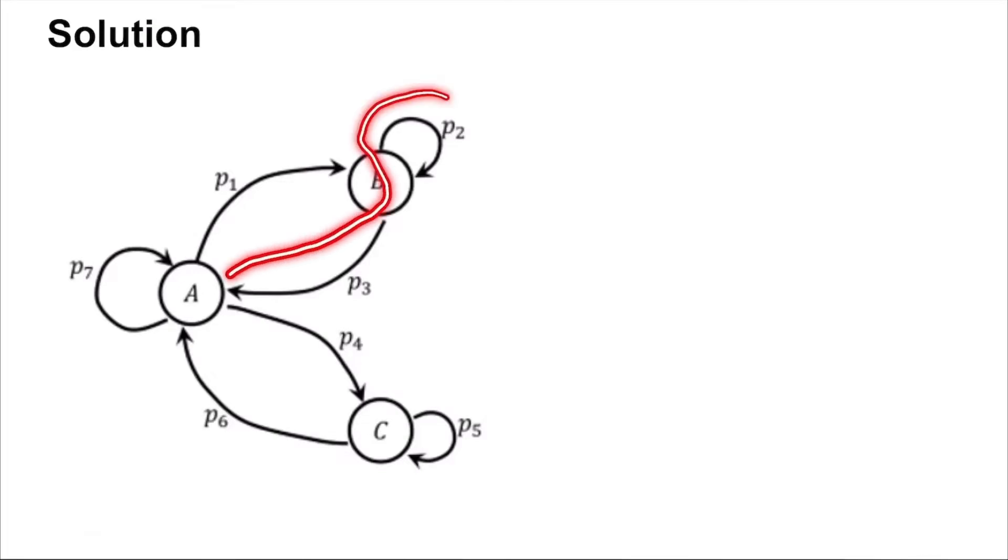From the state diagram, you can notice that given a state, there are only two possible outcomes: it stays in the state, or it moves on to another state. For example, for state B, you will find that the probability P2 plus P3 is equal to 1. The probability of staying in B is P2, and the probability of going from B to A is P3.